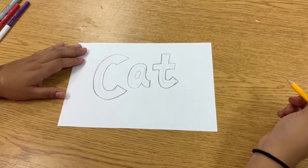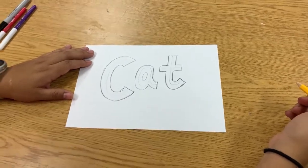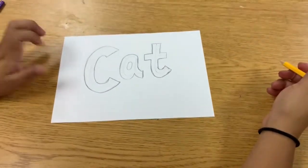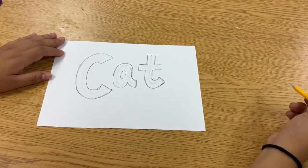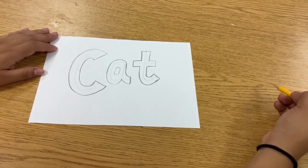Now, once you are here, you can start to add some cool designs at the ends of your letters. So right here on the T, I could add a squiggle line or an arrow.